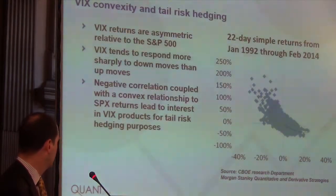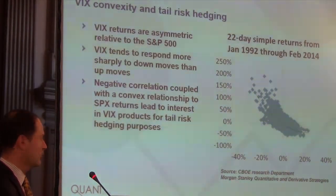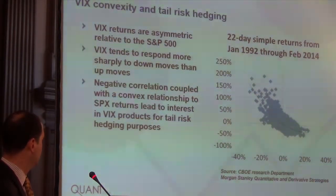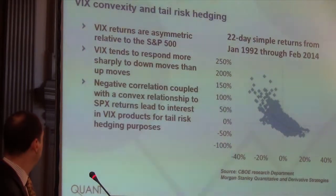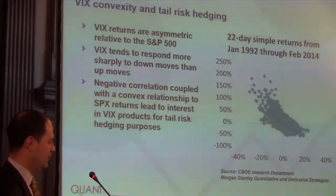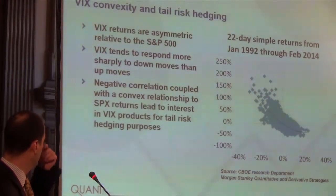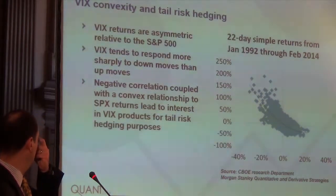This slide illustrates the convexity of VIX returns and its usefulness for hedging. I took 22-day simple returns from 1992 to February 2014 and plotted the simple return of the VIX versus the simple return of the S&P 500. You can see a very asymmetric pattern — for down moves in the S&P 500, the left side of the graph shows a very positive VIX response, resulting in strong upward moves in the VIX. This negative correlation combined with strong convexity is what drives everybody's interest in developing a tail hedge portfolio using VIX options or futures.